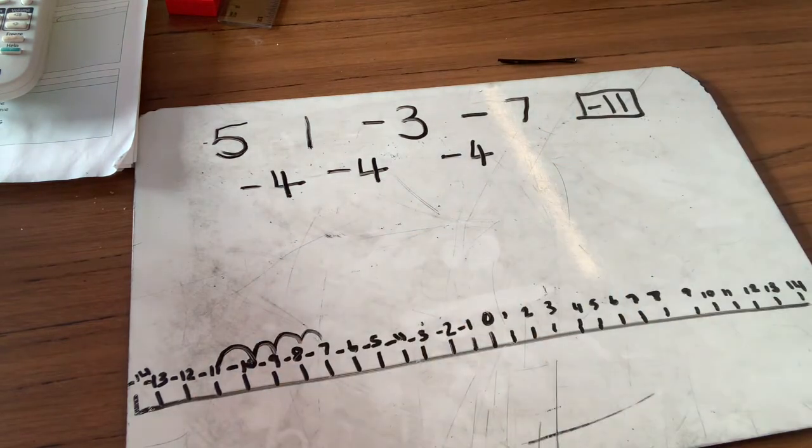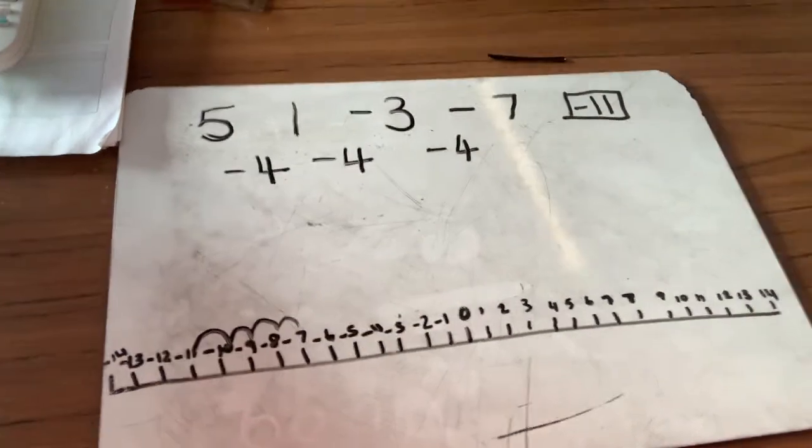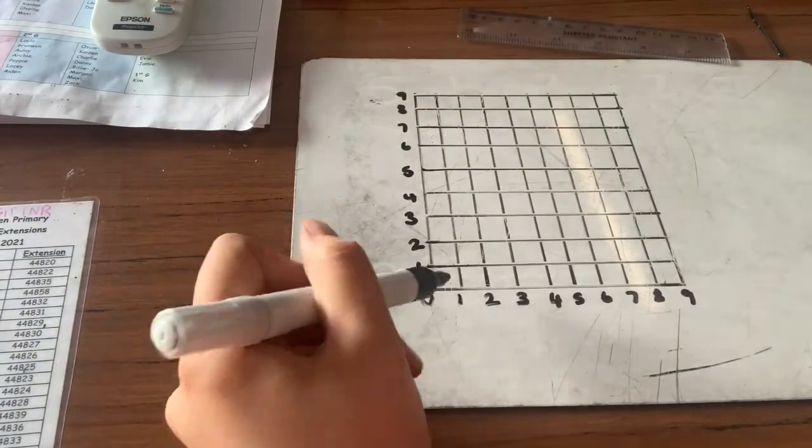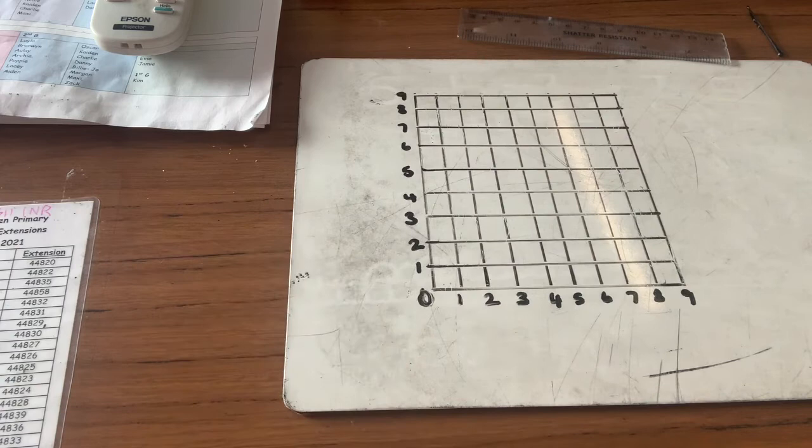So that's how we use our number line to help work out our negative numbers. So another thing we're going to have a look at.